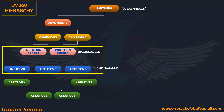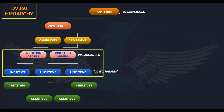This is the DV360 hierarchy, where it has Partners, under that Advertisers are created, then Campaigns, under that Insertion Orders, Line Items, and Creatives. Let's assume at Partner Level, when you have given 20 exchanges and you start creating the campaign, you create Advertisers, then Campaigns and Insertion Orders. Insertion Orders and Line Items will inherit the settings from the above level.